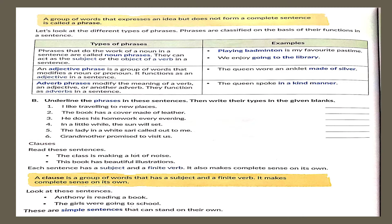Coming to the clauses section as given in your book. Read the sentences: the class is making a lot of noise; this book has beautiful illustrations. These sentences have a subject and finite verb, and they also make complete sense on their own. We have learned that these groups are called independent clauses. They are also simple sentences.